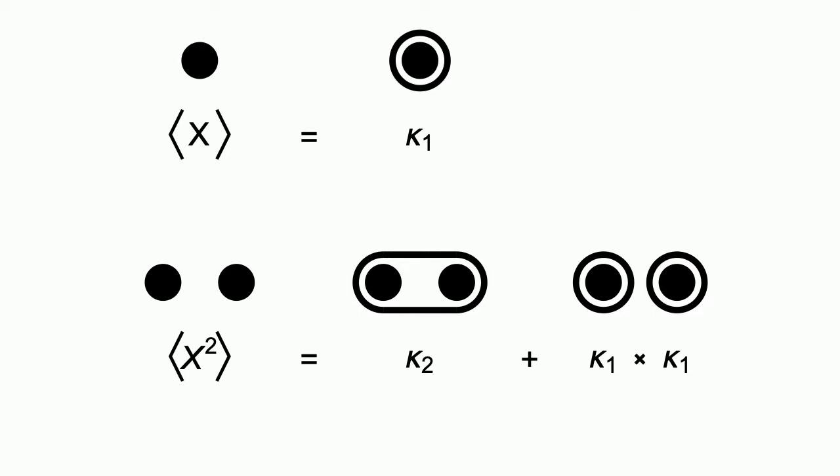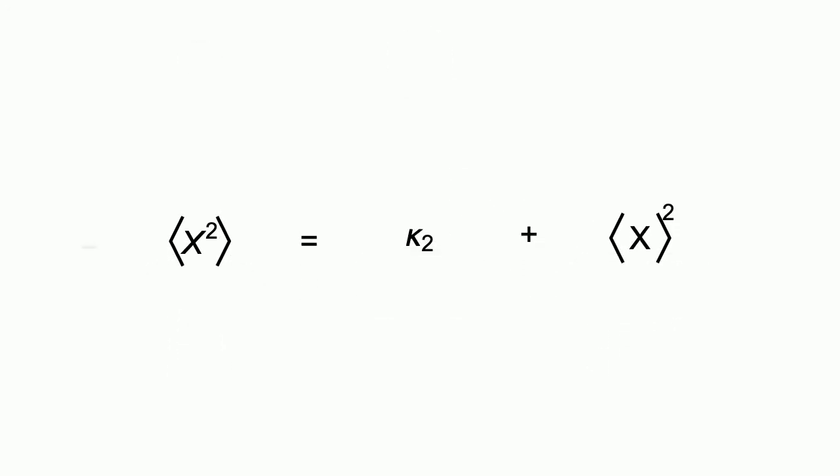The first cumulant is easy. It's simply the mean itself. Substituting the top equation into the bottom, we can rearrange to get the familiar expression for the variance.